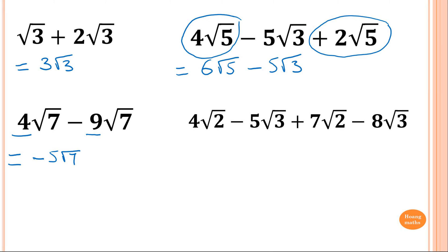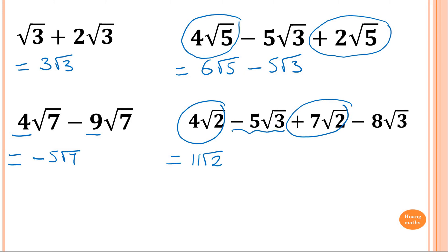This one: 4 root 2 plus 7 root 2 gives 11 square root of 2. Then minus 5 root 3 minus 8 root 3 — we add 5 plus 8 to get 13, so minus 13 square root of 3. Just collecting like terms.